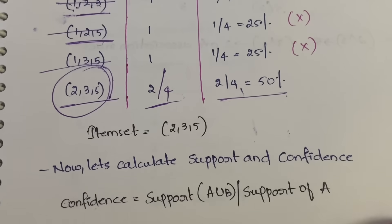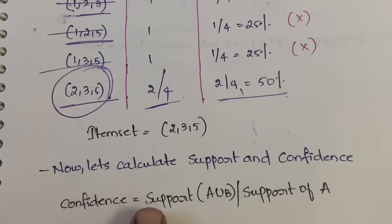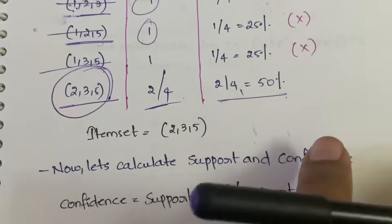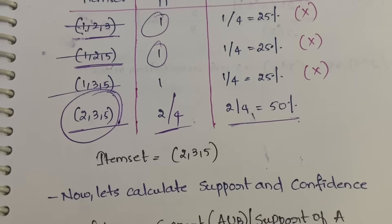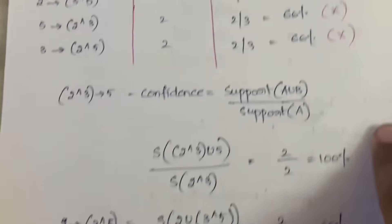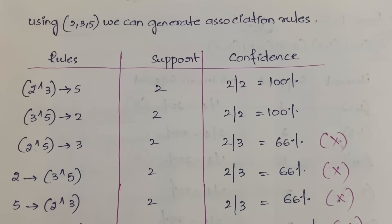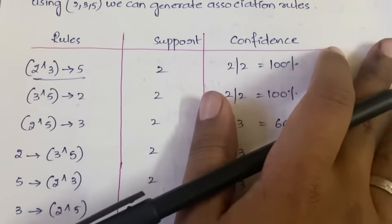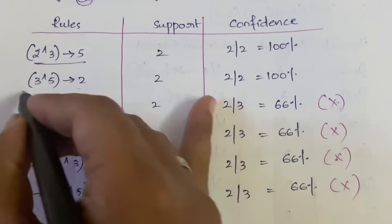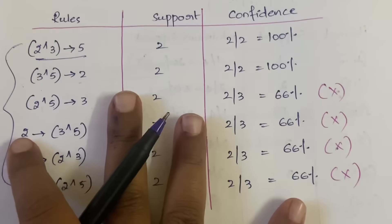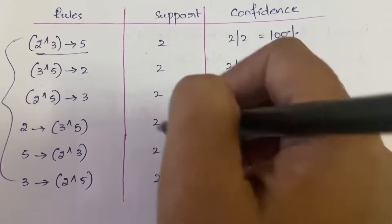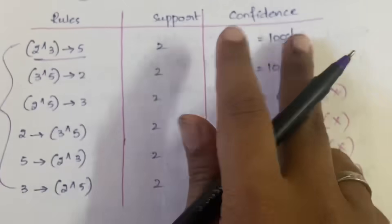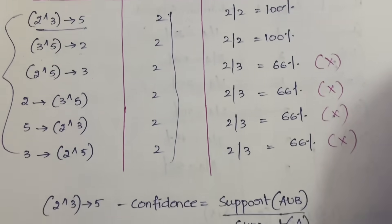Now we generate association rules from {2, 3, 5}. The six possible rules are: (2,3)→5; (3,5)→2; (2,5)→3; 2→(3,5); 3→(2,5); 5→(2,3). The support for all rules is 2, since {2,3,5} appeared twice in the transactions. Now we calculate the confidence for each rule using the formula: Confidence = Support(A∪B) / Support(A).